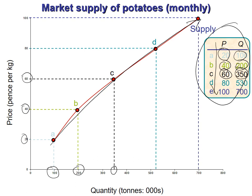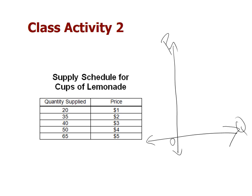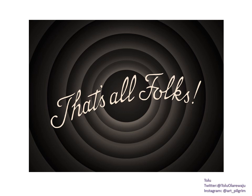For the class activity, plot the supply curve for the given supply schedule. Don't forget: price on the vertical axis and quantity on the horizontal axis. That's it for this week — have a fantastic week. I'll put up a video for market equilibrium next, which will bring demand and supply together. See you later!